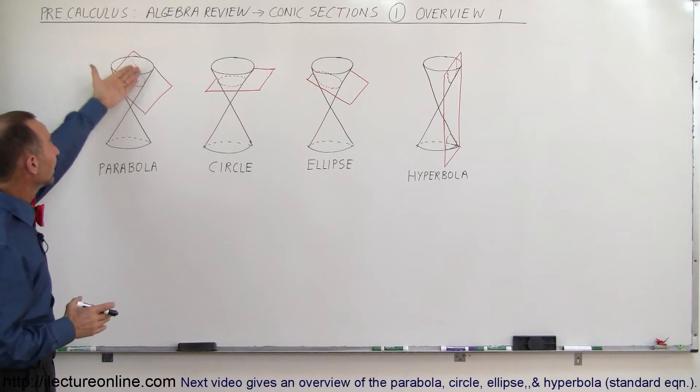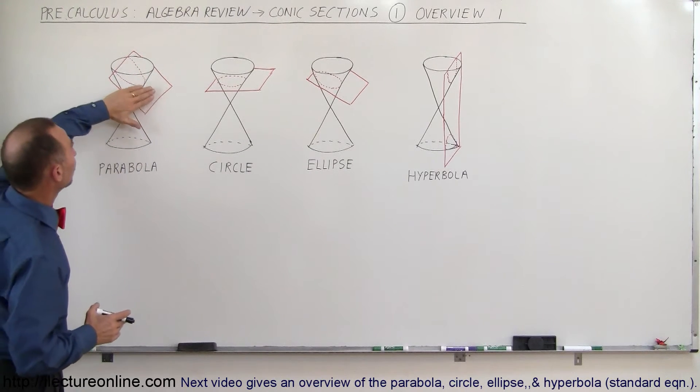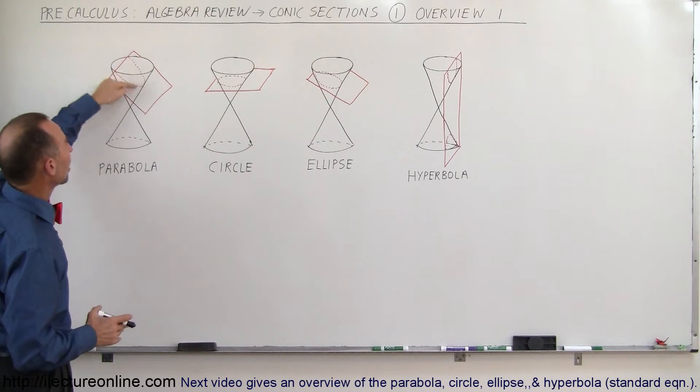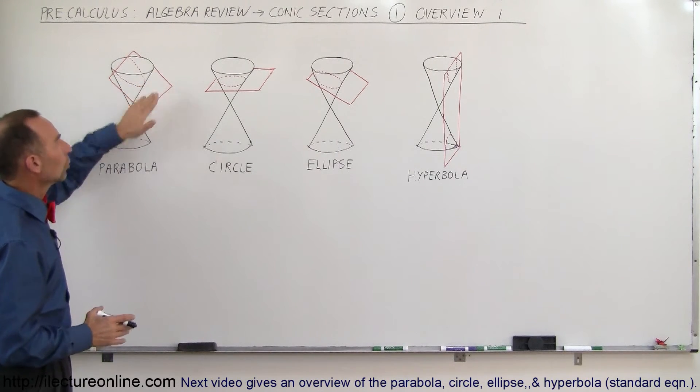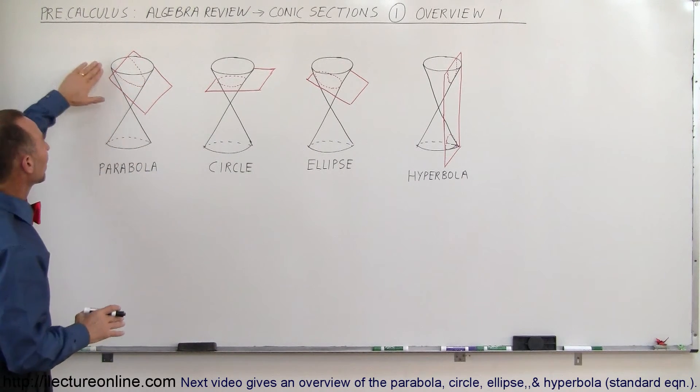If we cut the cone with the sheet where the sheet sticks out the top end of the cone, we end up with a parabolic shape where the plane intersects the cone.